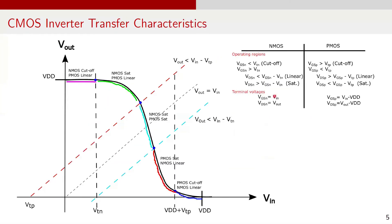Now that we understand the voltages at the terminals of NMOS and PMOS, let's explore the voltage transfer characteristic of the CMOS inverter. I have put a table summarizing the operating conditions of the PMOS and NMOS transistors across their three different regions and also the corresponding terminal voltages in the inverter circuit. The graph illustrates the voltage transfer curve of a CMOS inverter, with input voltage VIN on the x-axis and output voltage Vout on the y-axis. This curve demonstrates how the output voltage changes as the input voltage varies.